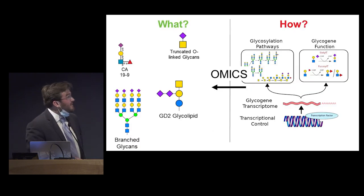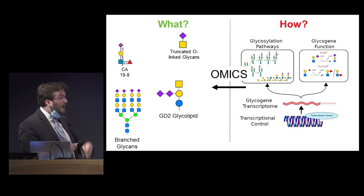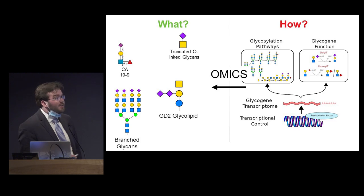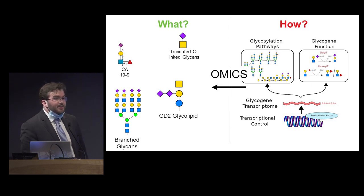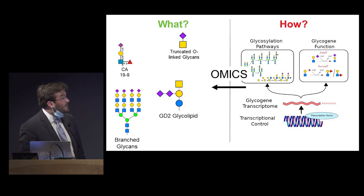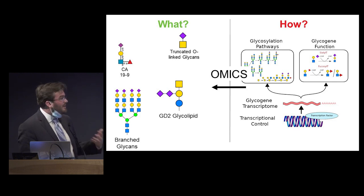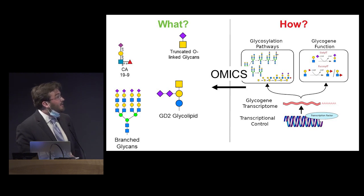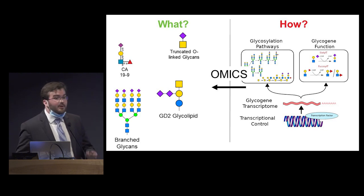We have a pretty good idea of what is changing — there are many mass spectrometry studies being performed to better characterize what structures are changing and how much. However, we don't really understand how these glycans are changing in cancer. Glycosylation pathways are influential in creating these glycan structures, and the enzymes responsible are encoded in the genome and transcribed as genes. So we need to understand how gene expression related to the glycosylation process is regulated. That's the focus of my work today.